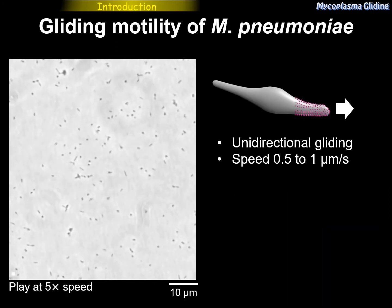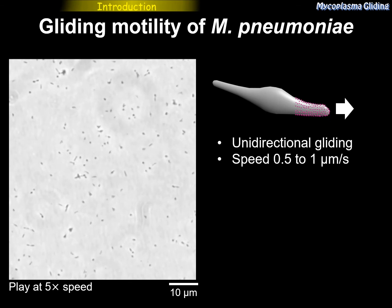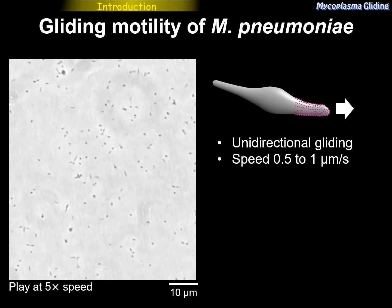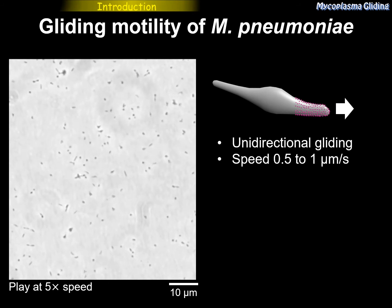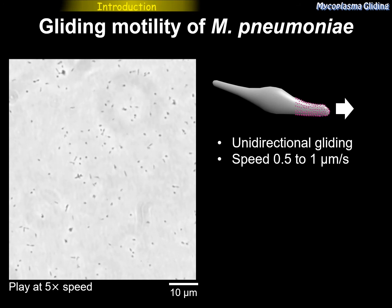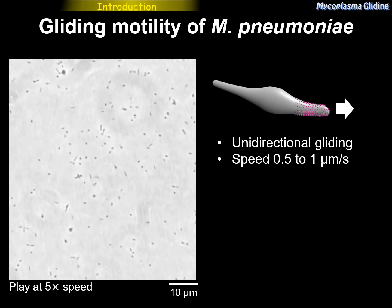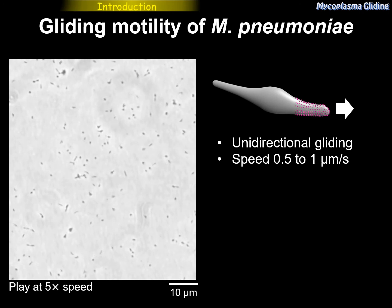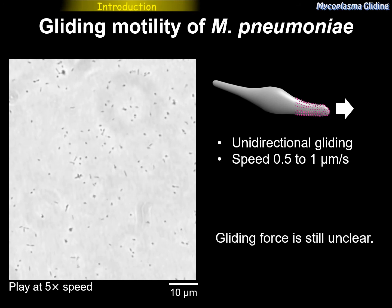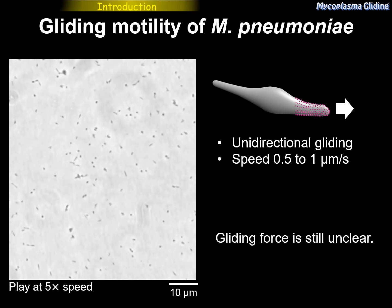This is a movie of Mycoplasma pneumoniae gliding on a glass surface, played at 5 times speed. They show unidirectional gliding movement. The gliding speed in our measurements was about 0.5 microns per second, and reported up to 1 micron per second. Generally, the mechanical characteristics and detailed analysis of movements are essential for creating a detailed model for the motility mechanism. However, no information is available about the force for Mycoplasma pneumoniae gliding.